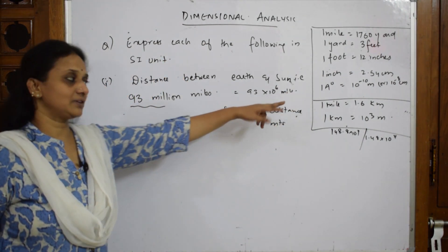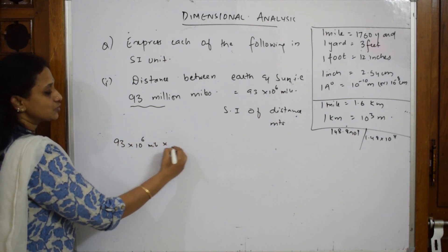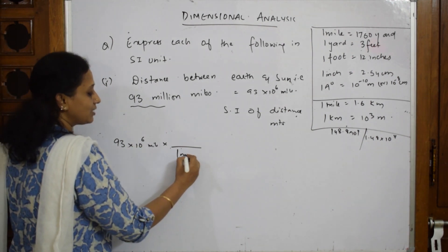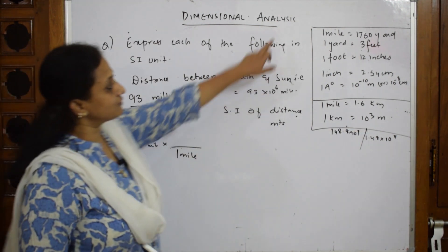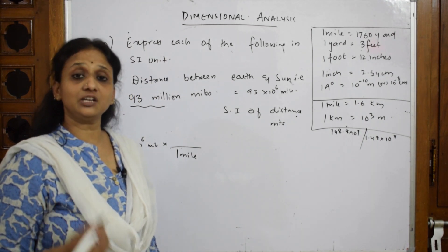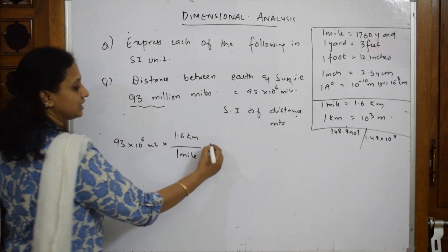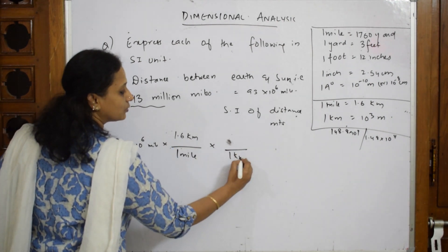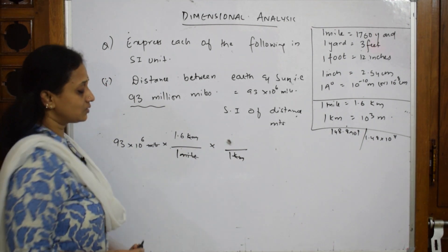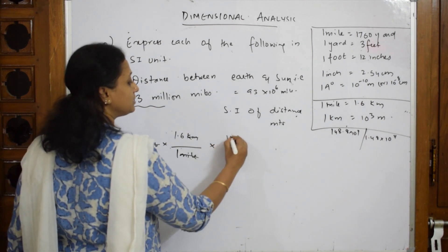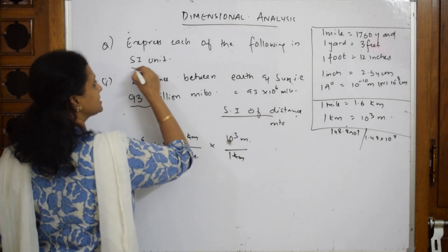93 million miles = 93 × 10⁶ miles. Multiply and divide by 1 mile to cancel miles. 1 mile = 1.6 km. Then divide by 1 km so kilometers cancel. 1 km = 10³ meters. I stop at meters because the SI unit for distance is meters.